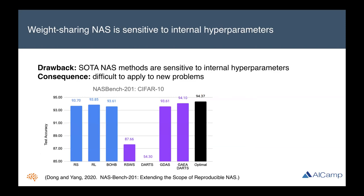This is in contrast to weight sharing NAS methods, which are quite sensitive to internal hyperparameters of the super network, like the learning rate and optimization parameters. Going back to the NASBench-201 results, DARTS failed catastrophically on this dataset — evidence that weight sharing is fairly difficult to apply to new problems and new search spaces. This is why we recommend using standard hyperparameter optimization methods as a first pass for NAS. That said, more recent weight sharing methods have improved performance even more and widened the gap between state-of-the-art NAS methods and standard HP search, so you can also try out weight sharing algorithms in Determined.